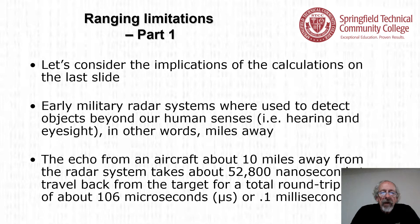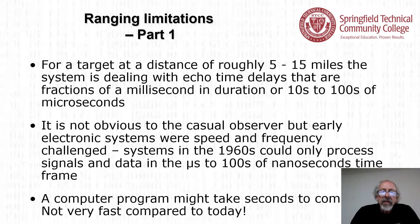There are limitations for ranging. Early military radar systems were used to detect objects beyond our human senses — miles away. The echo from an aircraft about 10 miles away takes about 52,800 nanoseconds to travel back, for a total round trip time of about 106 microseconds. Early electronic systems were speed and frequency challenged; systems in the 1960s could only process signals in a microsecond to hundreds of nanoseconds time frame, and a computer program might take seconds to complete.